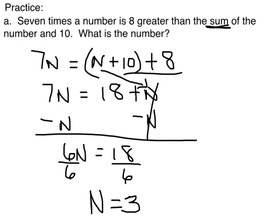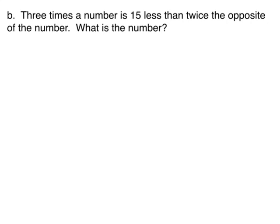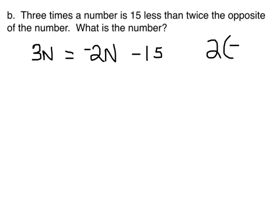All right, let's do B. 3 times the number is 15 less than twice the opposite of the number. What's the number? All right, let's start with 3 times the number is. It is 15 less than something, so I'm going to come over here, and I'm going to subtract 15. What is it 15 less than? Twice the opposite of the number. And I'm going to write that like this, negative 2N, because twice the opposite of the number is negative 2N.